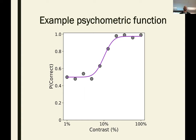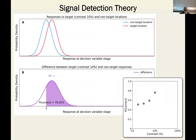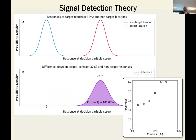Under signal detection theory, when you're in the middle of this range, there's a probability you'll be correct on each trial, but you're not definitely correct. This variation arises because you have a noisy response to the target and non-target locations. On average it's higher at the target location, and how much larger it is determines how well you perform. Performance is determined by the difference between the two distributions and how much of that difference is greater than zero — on what proportion of trials is the target response greater than the non-target response.